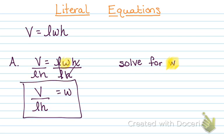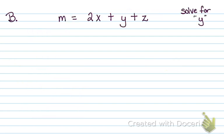We're going to try a few. You'll need a highlighter to help you highlight which variable we're solving for. Alright, problem B — we're going to solve for Y. So we're going to highlight our Y, and we want to get everything else away.